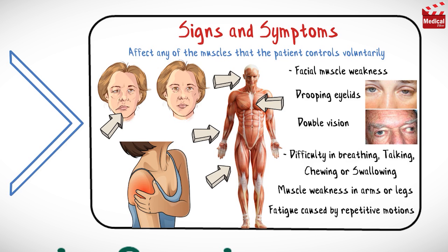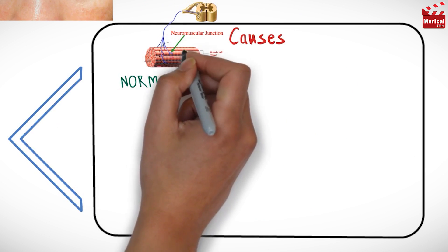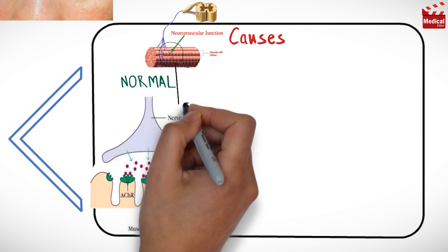To better understand myasthenia gravis, let's review normal muscle contraction at the cellular level. When the neuromuscular system functions normally, in a specialized area of muscles called neuromuscular junctions, the chemical acetylcholine is released from presynaptic neurons to bind to nicotinic acetylcholine receptors on muscle cell membranes.